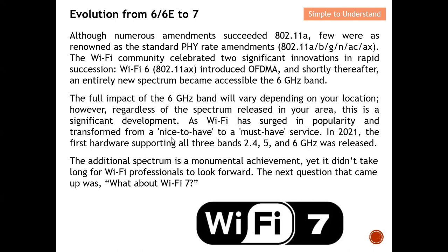In 2021, the first hardware supporting all three bands — 2.4 GHz, 5 GHz, and 6 GHz — was released with the Wi-Fi 6E standard. With Wi-Fi 6E, you can choose one of the three bands. The key difference with Wi-Fi 7 is that it can simultaneously utilize all three bands — 2.4 GHz, 5 GHz, and 6 GHz — for data transfer, which significantly increases the data rate.